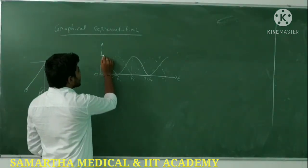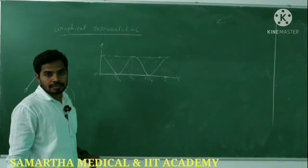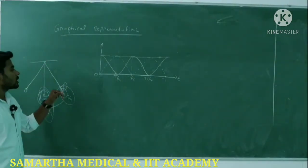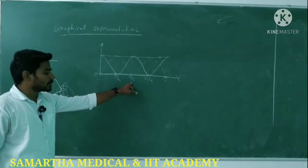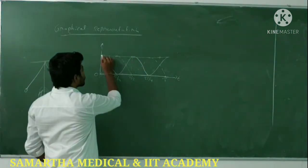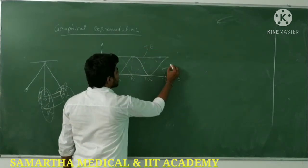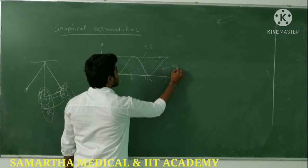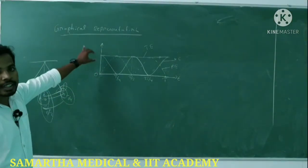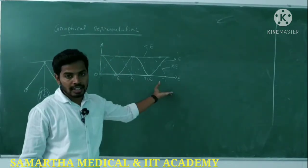At t = T/4, the particle is at extreme position — total energy is maximum. At t = T/2, the particle is at mean position — total energy is still maximum. This graphical representation shows kinetic energy, potential energy, and total energy vs. time intervals.